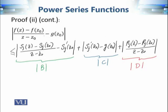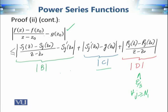Using the split f(z) = s_j(z) + r_j(z), we can write the expression in a form with three terms, labelled B, C, and D. In our previous discussion we proved that term D is less than ε/3 for all j greater than or equal to N₁. Now we focus on terms C and B.